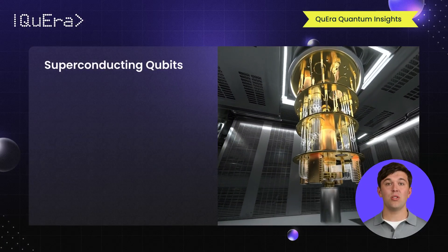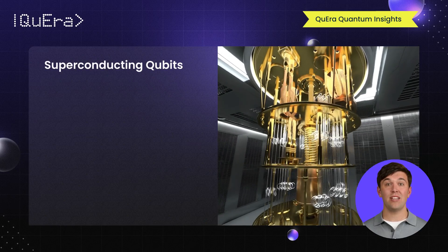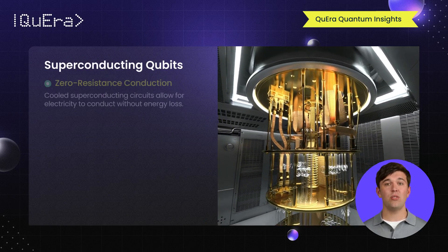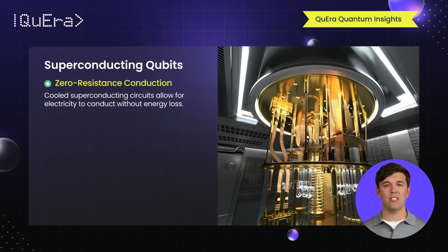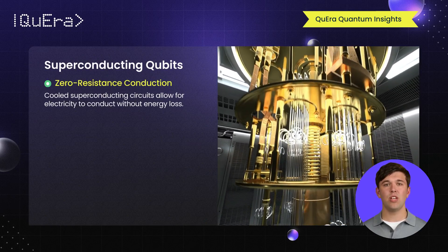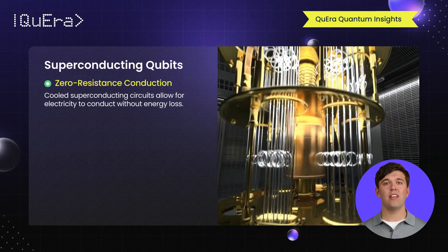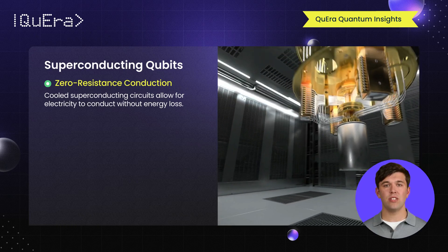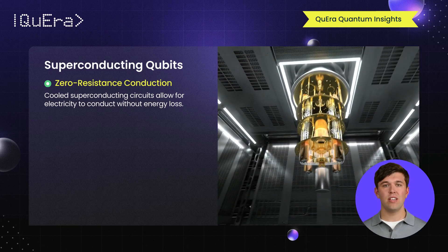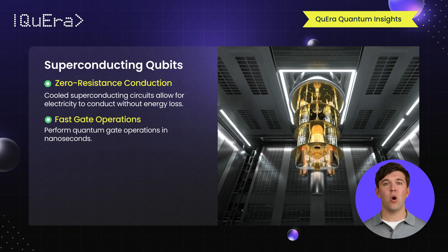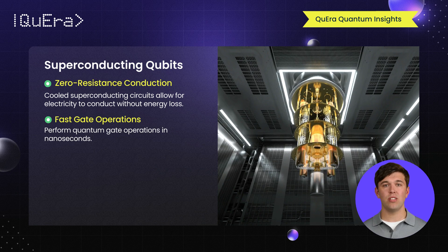Superconducting quantum computing is one of the most commercially advanced technologies. It uses superconducting circuits that are cooled to near absolute zero, where they conduct electricity with zero resistance. This modality is fast, with gate operations being computed within nanoseconds. Companies like IBM and Google have invested heavily in superconducting qubits, and several such computers are available for use.